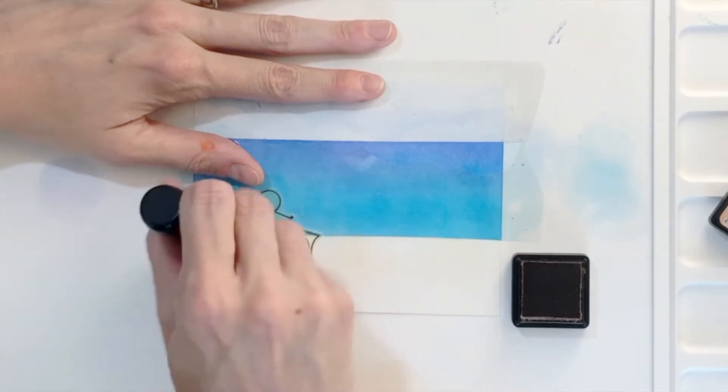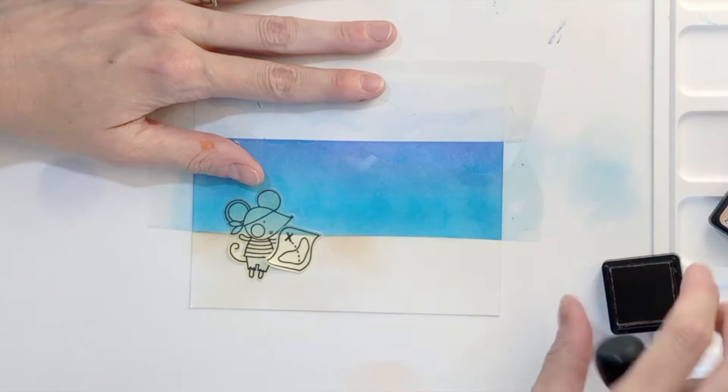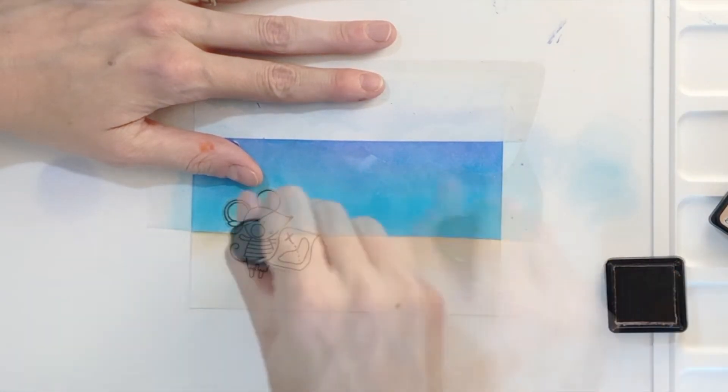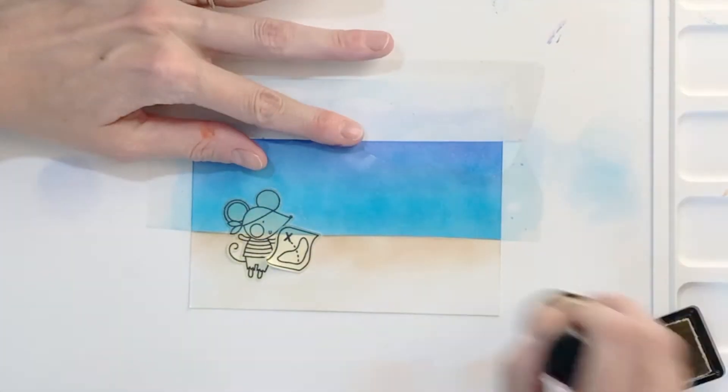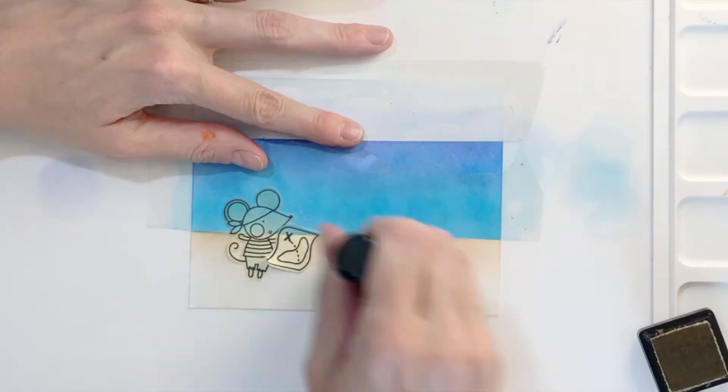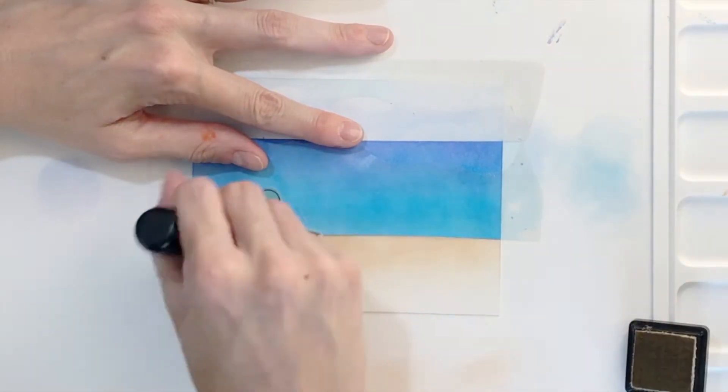Once I finish with that light color I'm going to move to a slightly darker tan. This is Tea Dye and I'm going to ink blend where the sand meets the ocean, and just blend along there creating a nice gradation on this sand.